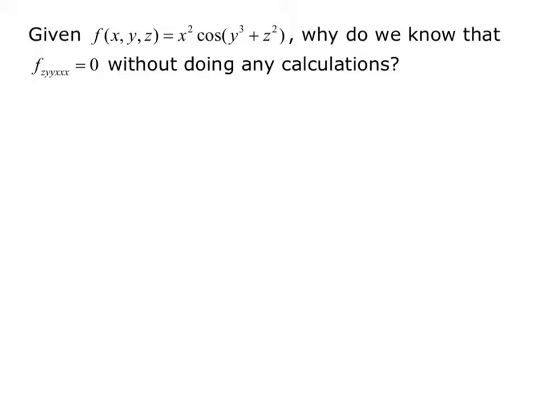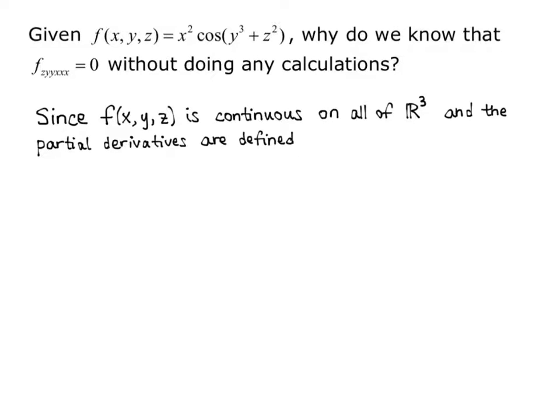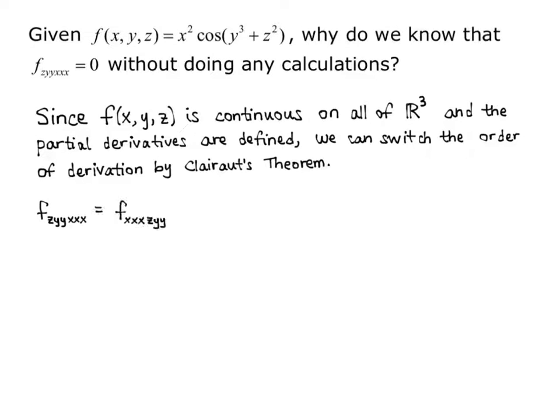So this is another example of where we can apply Clairaut's theorem. And we know that since our function f(x,y,z) is continuous on all of R³, and the partial derivatives are defined and continuous, we can switch the order of derivation by Clairaut's theorem. And so we can say f_zyyxxx equals f_xxxzyy. So I just switch the order. So now I'm doing the third derivative with respect to x first.